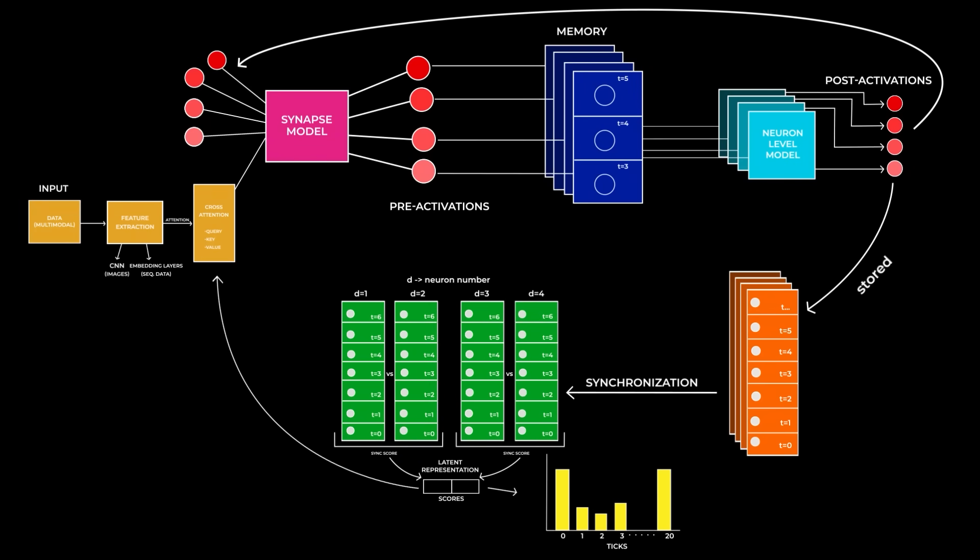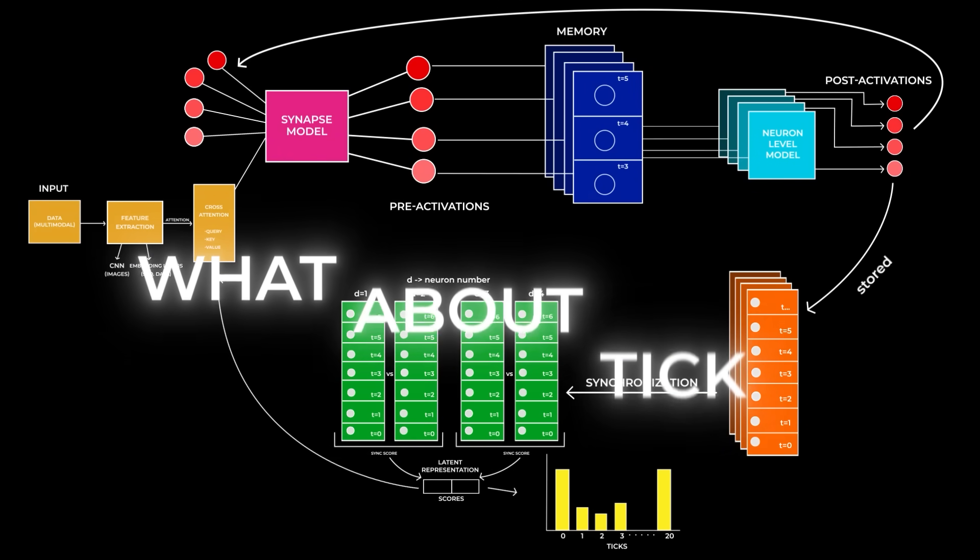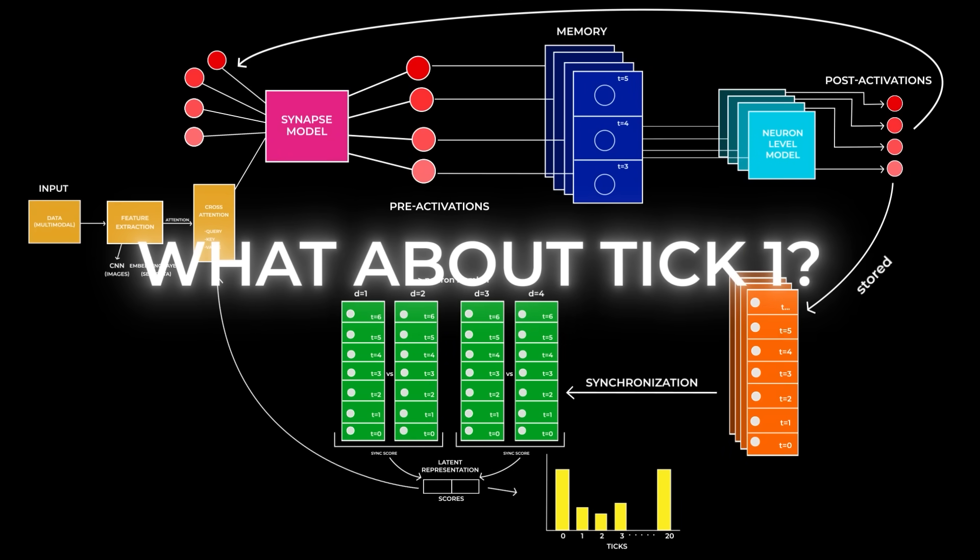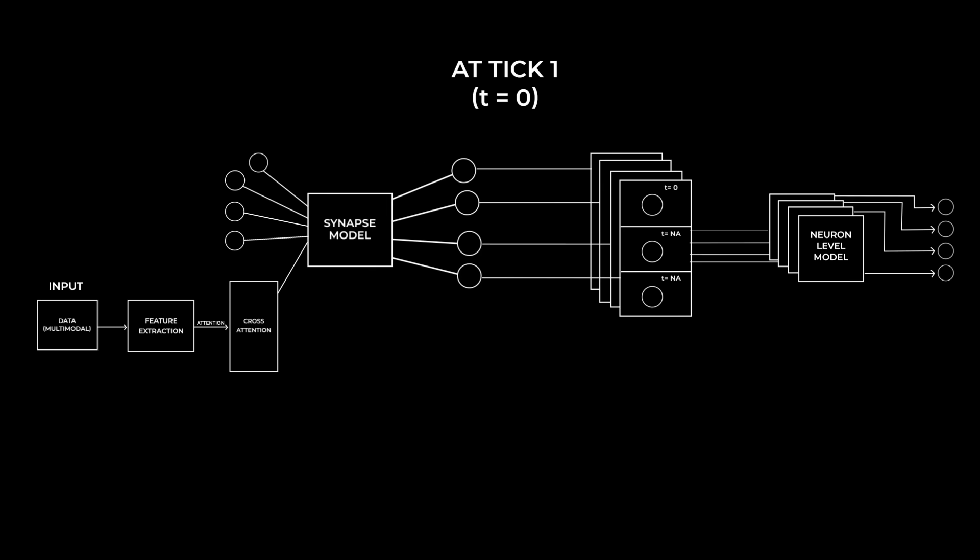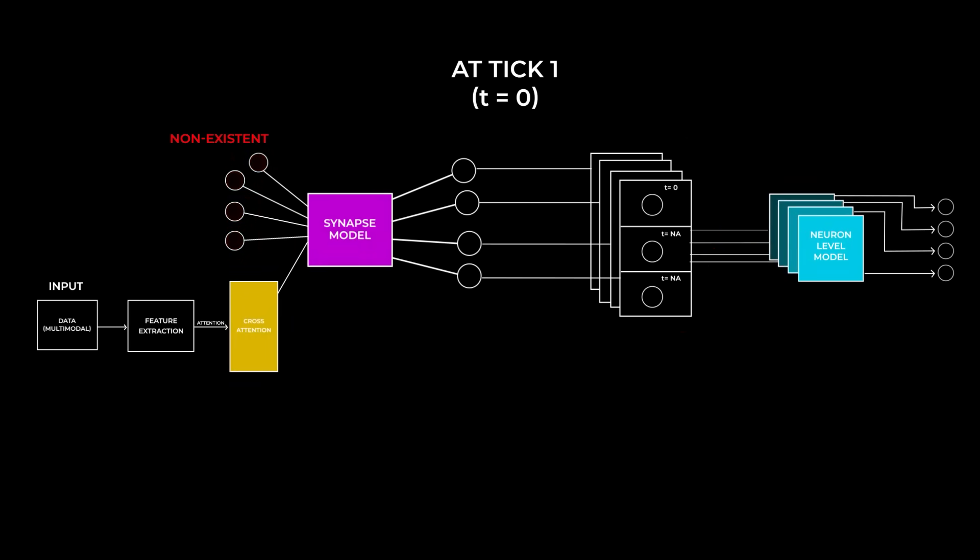To also tie up the loose ends, something we need to talk about is what happens on tick 1 as there is no historical information. Since the first tick wouldn't have a post-activation to refer to in the synapse model, and an NLM wouldn't have a history of pre-activations to look through, so alongside the synapse model or the neuron level models and the attention mechanisms which are the major components that require training, these initialization values can be set and optimized during training for the task it is learning, which will be much better than using values that are randomly initialized.